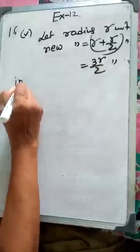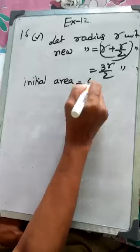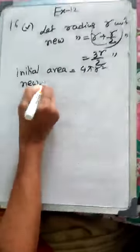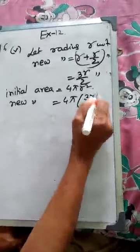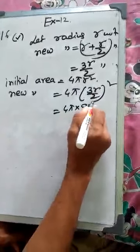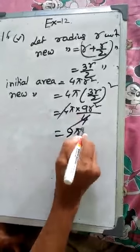Initial area is equal to 4π R². New area is equal to 4π (3R by 2)². That is 4π (9R² by 4). 4 is crossed, so 9π R².